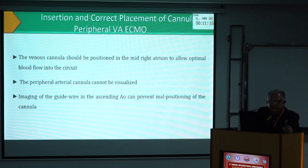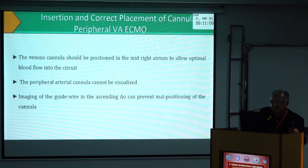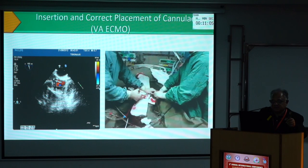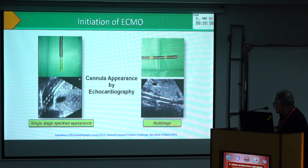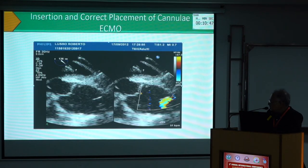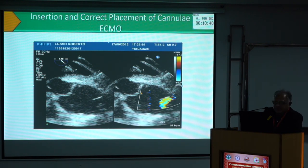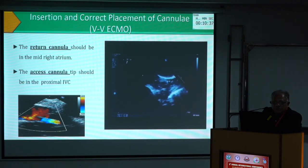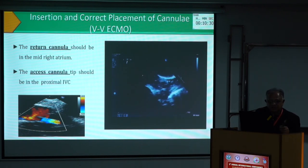Venous cannula is normally in the mid-right atrium for optimal blood flow. Peripheral arterial cannula cannot be visualized directly, but you can see the guidewire as it goes through the ascending aorta. You can see the single-stage cannula tip and the multi-stage cannula. Here is the liver and you can see the aorta. You can put a Doppler on the aortic valve to see the cannula going in and confirm flow. For VV ECMO, the return cannula should be in the mid-right atrium and the access cannula in the proximal IVC, and a Doppler will detect flow there.